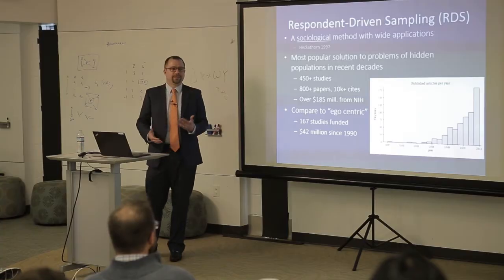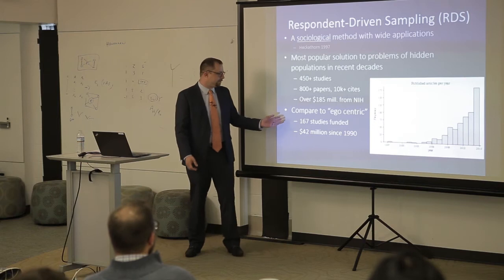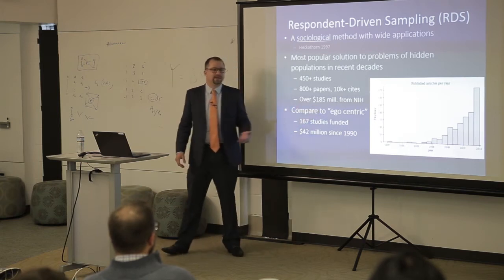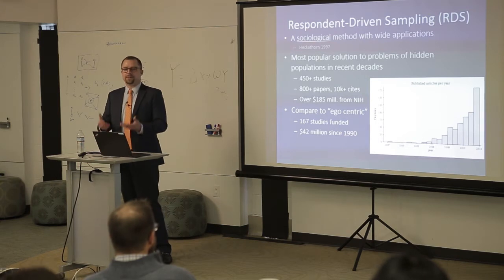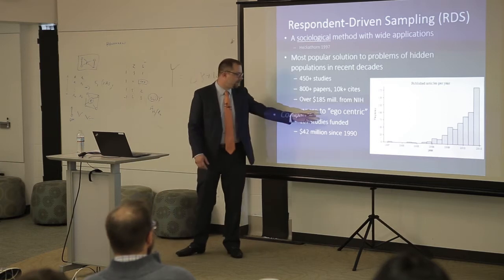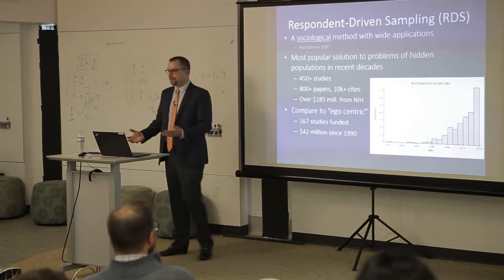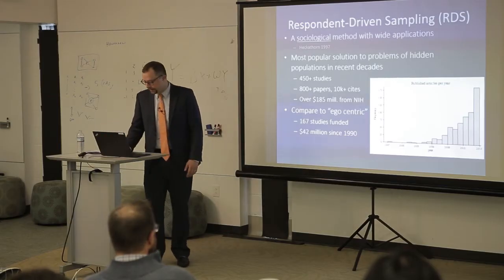For comparison, I searched NIH-funded studies mentioning egocentric networks — a common network design — and found only 167 studies, only $42 million of research, and that's since 1990, a good 10 years before the RDS work. So RDS is a very large, very popular method of collecting data.